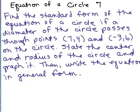This is part seven of an equation of a circle. Find the standard form of the equation of a circle if a diameter of the circle passes through points (7,4) and (-3,6) on the circle. State the center and radius of the circle and graph it. Then write the equation in general form.